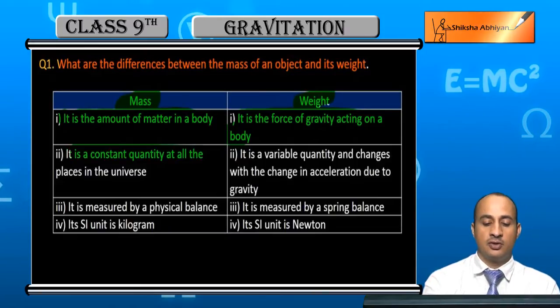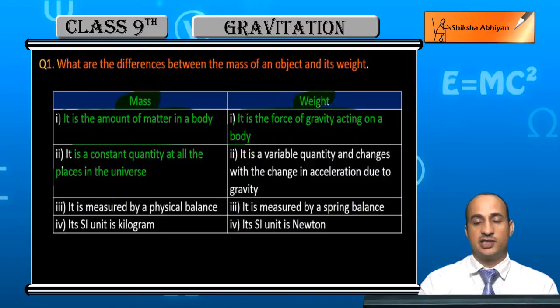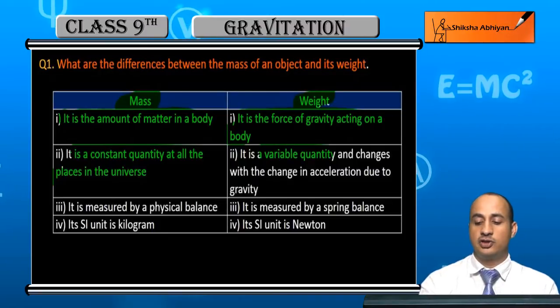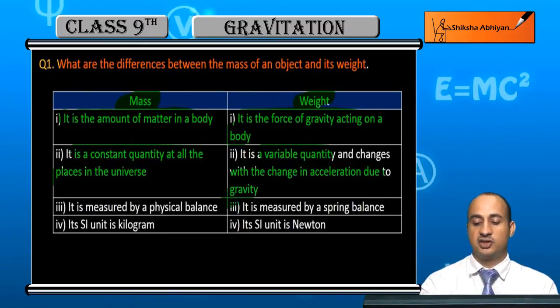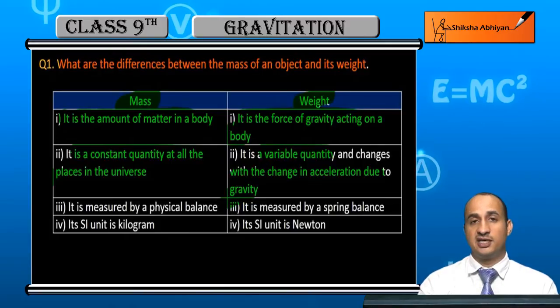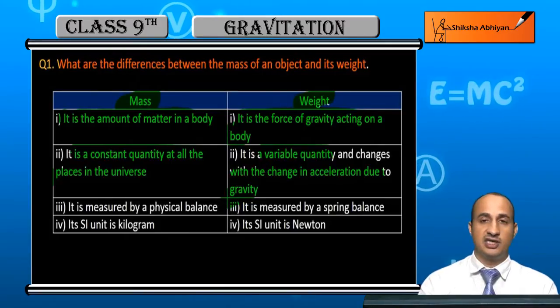Mass is a constant quantity at all places in the universe. Weight is a variable quantity and changes with the acceleration due to gravity, where the acceleration due to gravity can change.